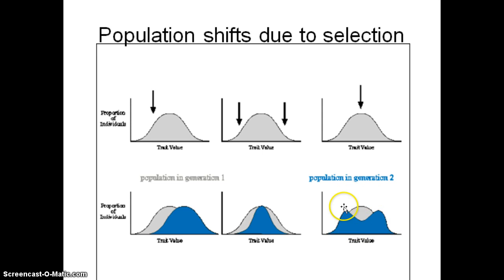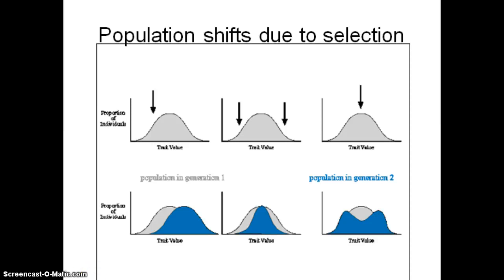Those are the different types of selection, which are also documented in your textbook — great idea to look those over. Those are the things that cause evolution. Practice the mnemonic device: 'My guppy flow, nobly sits, sincerely petrified near mice.'